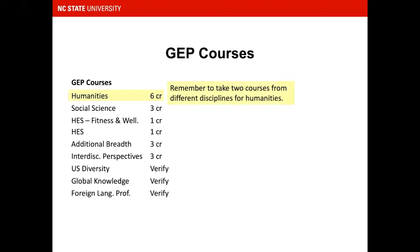The Humanities category requires you to take two three-credit courses from different disciplines. Each course selected from this category must have a different prefix — for example, History, English, Religion, etc.